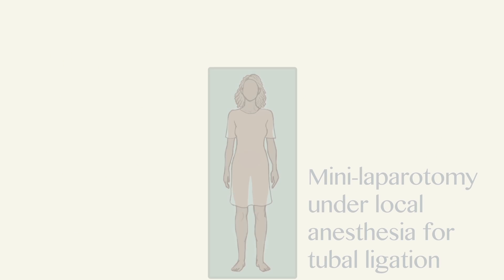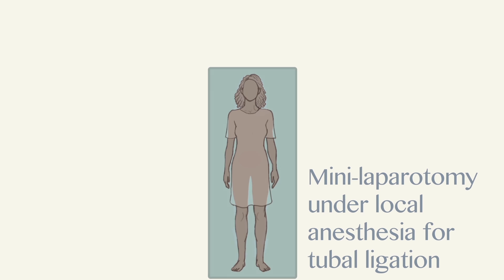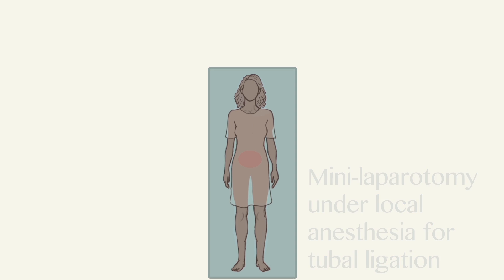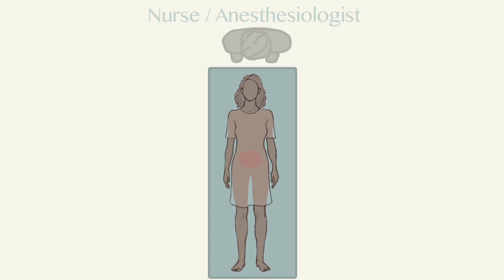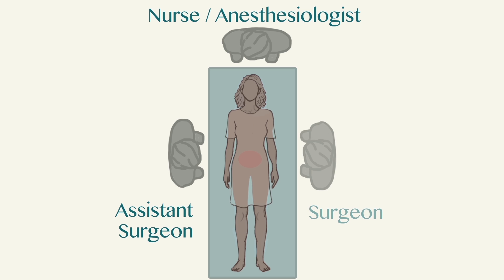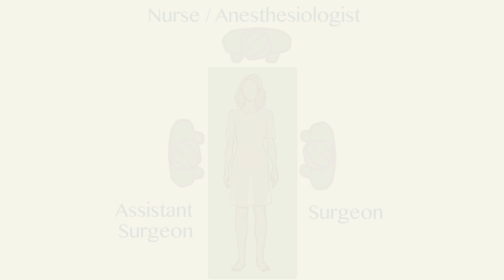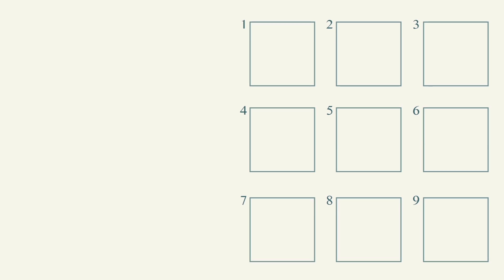This animation demonstrates the surgical technique of mini-laparotomy under local anesthesia for tubal ligation. It consists of nine chapters showing the steps of the procedure.